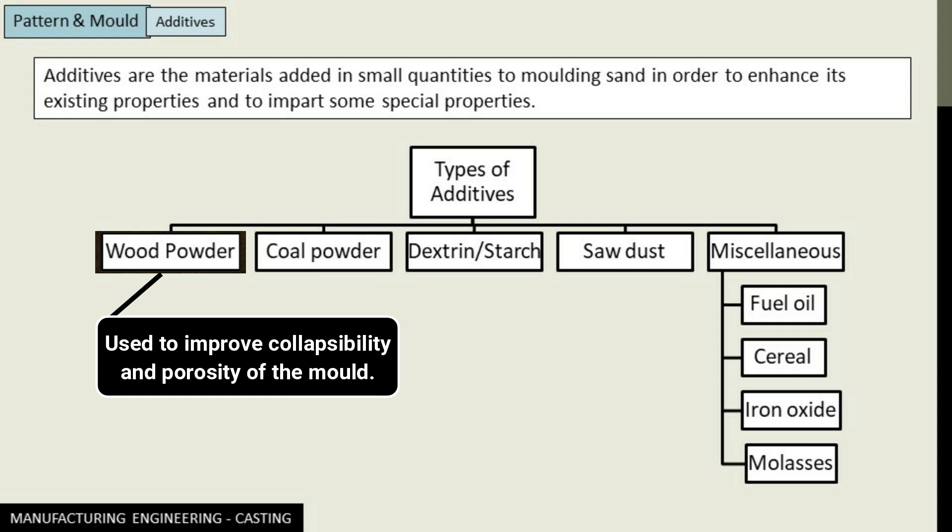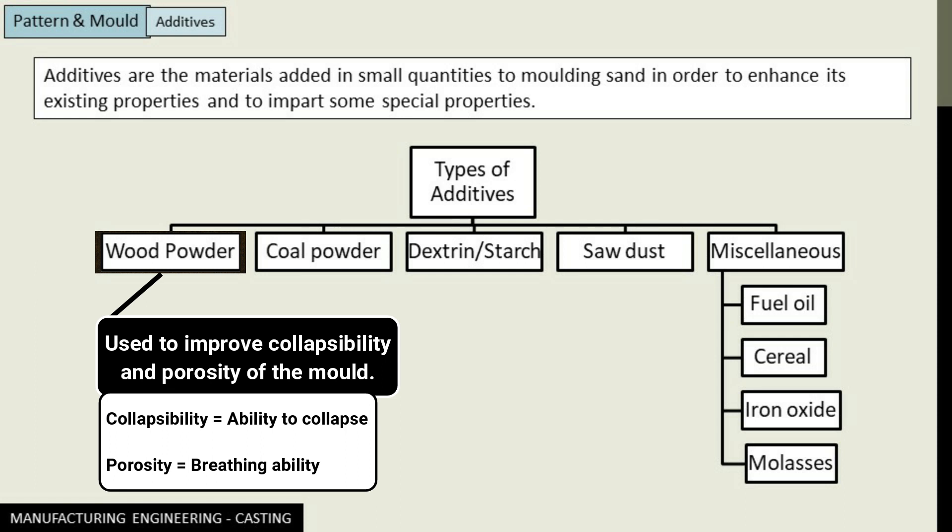Wood powder is used to improve the collapsibility and porosity of mold sand. Collapsibility is the ability to collapse — at the end of the casting process you have to break the mold, and if the mold collapses easily, we say the collapsibility of the molding sand was good. Collapsibility can be enhanced using wood powder. Porosity is actually permeability — it is the breathing ability or breathing property of the molding sand.